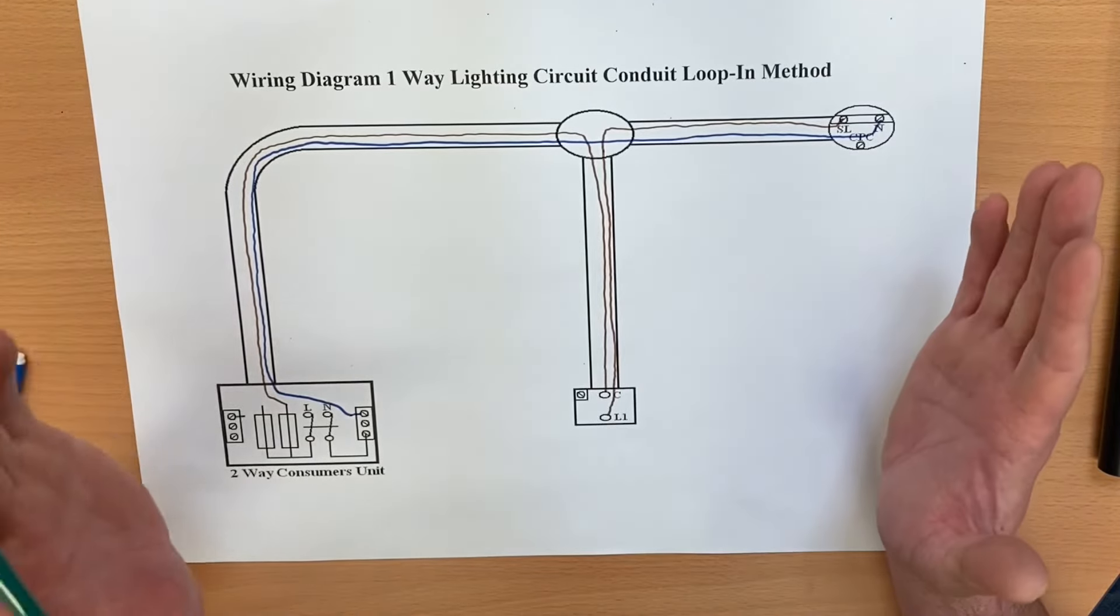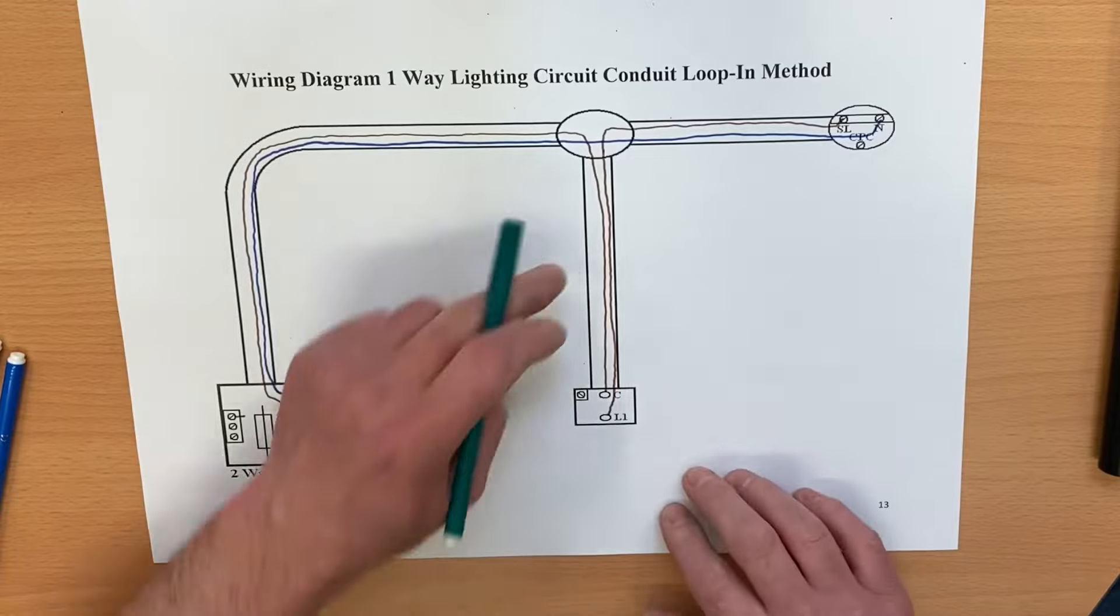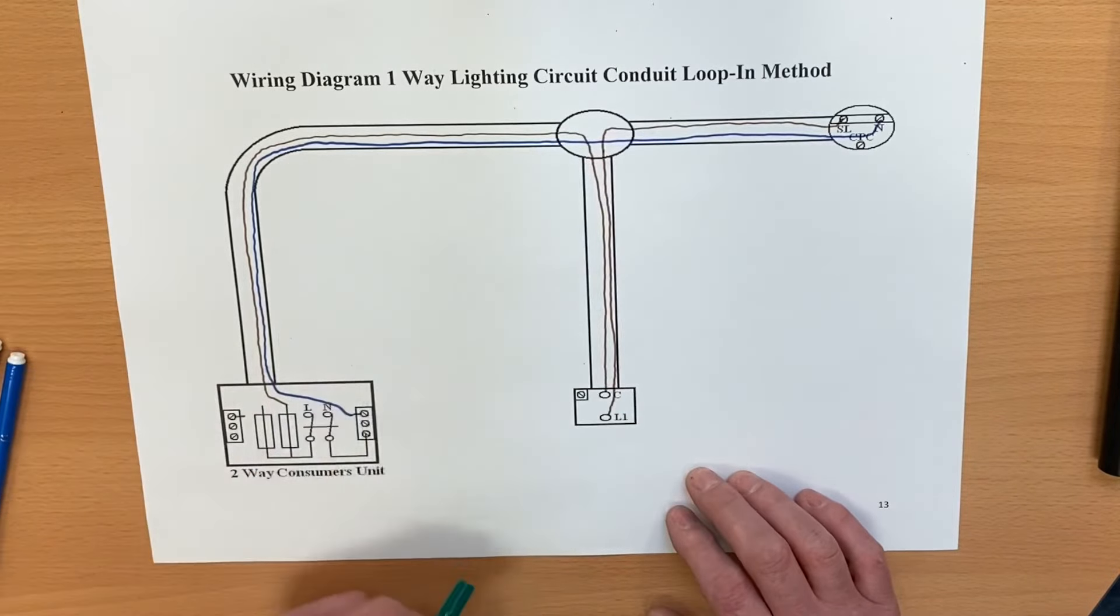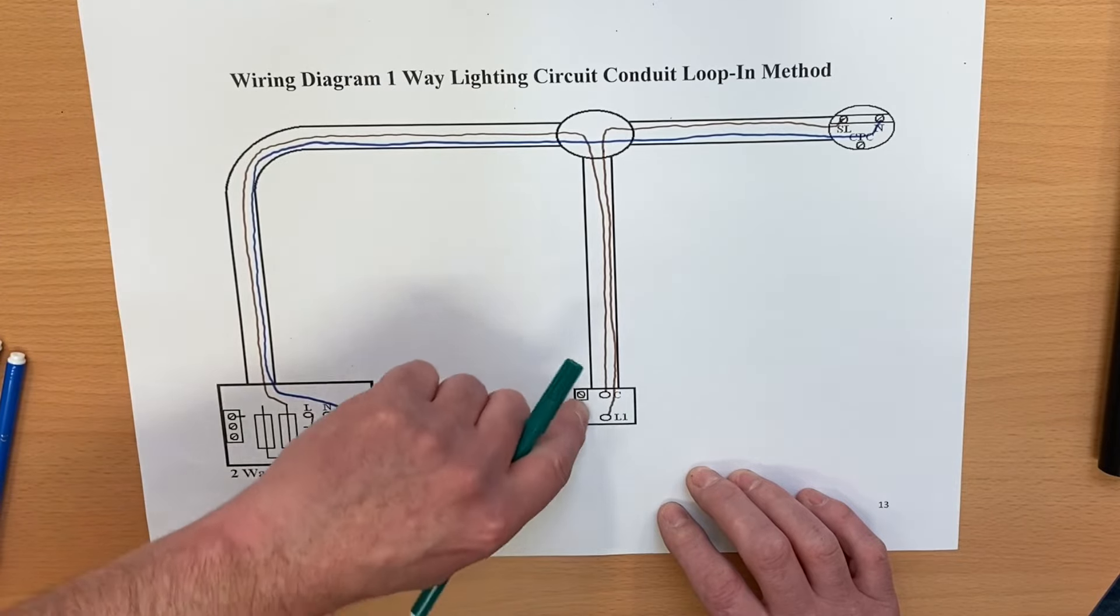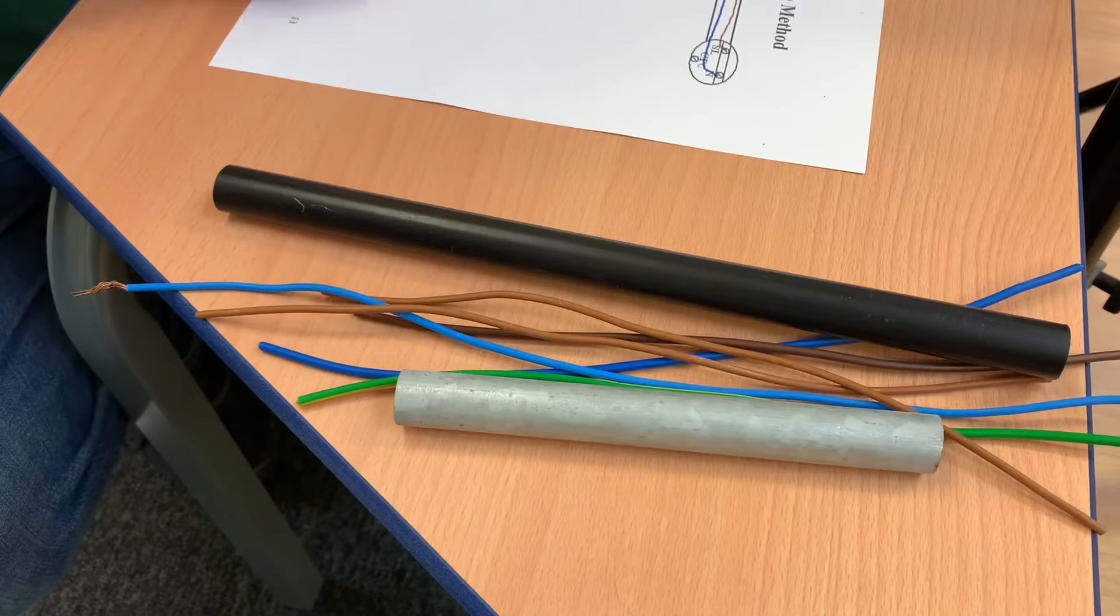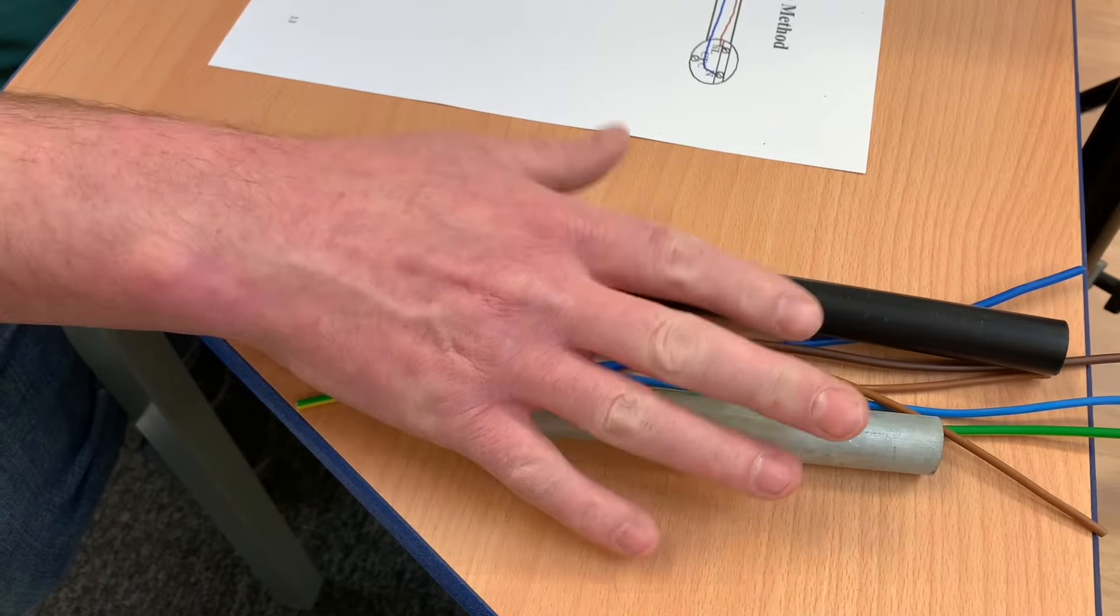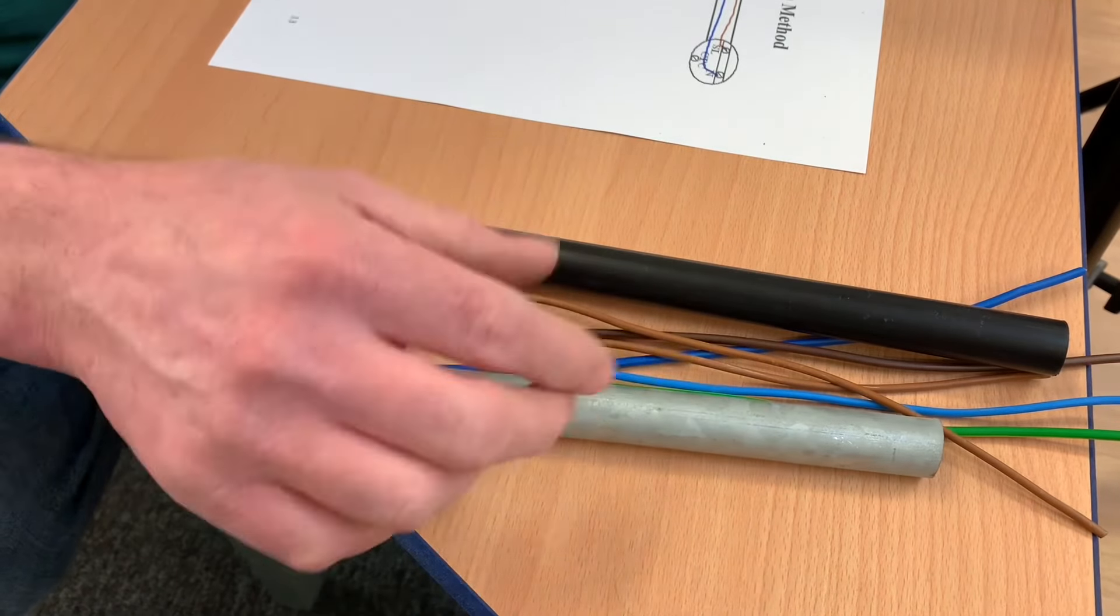They look on this drawing as if they're a very similar distance apart, so you're probably logically going to bring a CPC down to the switch and back again. Often in a conduit system, the actual switches themselves can be metallic, and obviously the CPC will be needed because that metallic switch is an exposed conductive part.